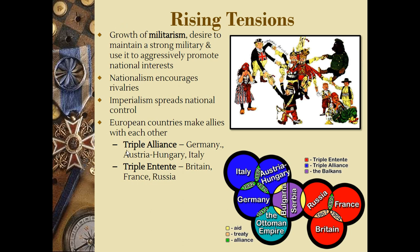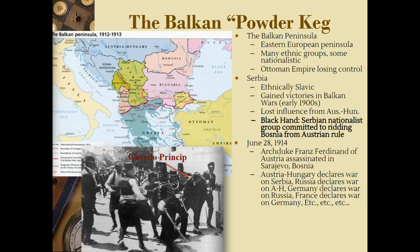All of these things — people growing their militaries, making alliances, nationalism since the early 1800s, and imperialism — these are long-term causes. They have been happening over a long time. When we get to the Powder Keg, this is going to be the short-term cause of World War I — the one thing that kind of sets all of this into motion.